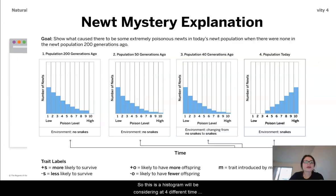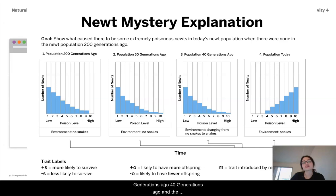This is a histogram we'll be considering at four different time points: the population 200 generations ago, 50 generations ago, 40 generations ago, and the population today.